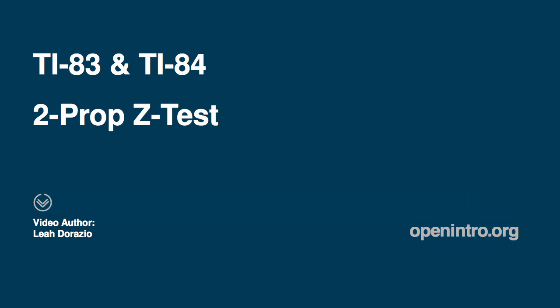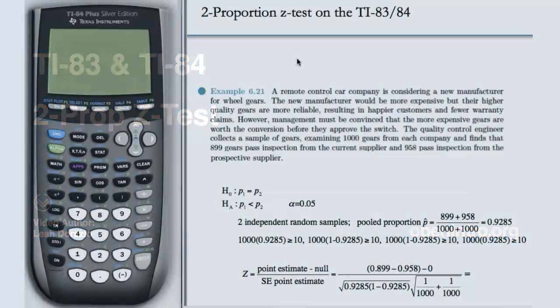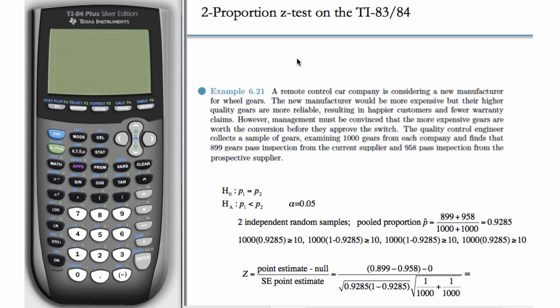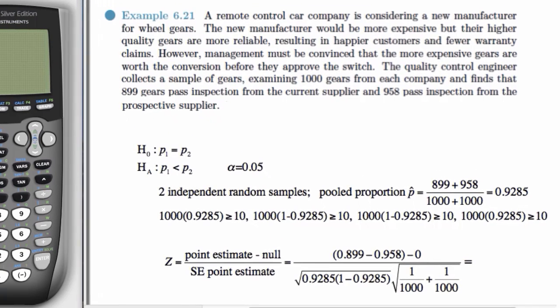In this video, we'll see how to evaluate the z-test statistic and p-value for the two-proportion z-test. The instructions for the TI-83 and TI-84 are identical. And we'll start with this example, the same one we used for the two-proportion z-interval.